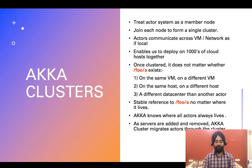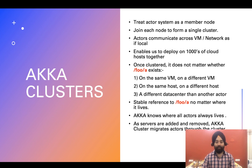In an Akka cluster, each actor system is treated as a member node. By joining such nodes together, we form an Akka cluster. Actors of actor systems deployed on different VMs distributed over the network communicate with each other as if on a local network. This allows us to deploy actors to thousands of cloud hosts together. Once properly clustered, it doesn't matter where a particular actor — for example 'foo/a' — exists, whether on the same VM, a different VM, the same host, a different host, or even a different data center. Akka cluster provides the same reference to that actor regardless of where it lives, knows exactly where each actor is over the distributed network, and migrates actors as servers are added or removed to maintain a healthy state throughout.